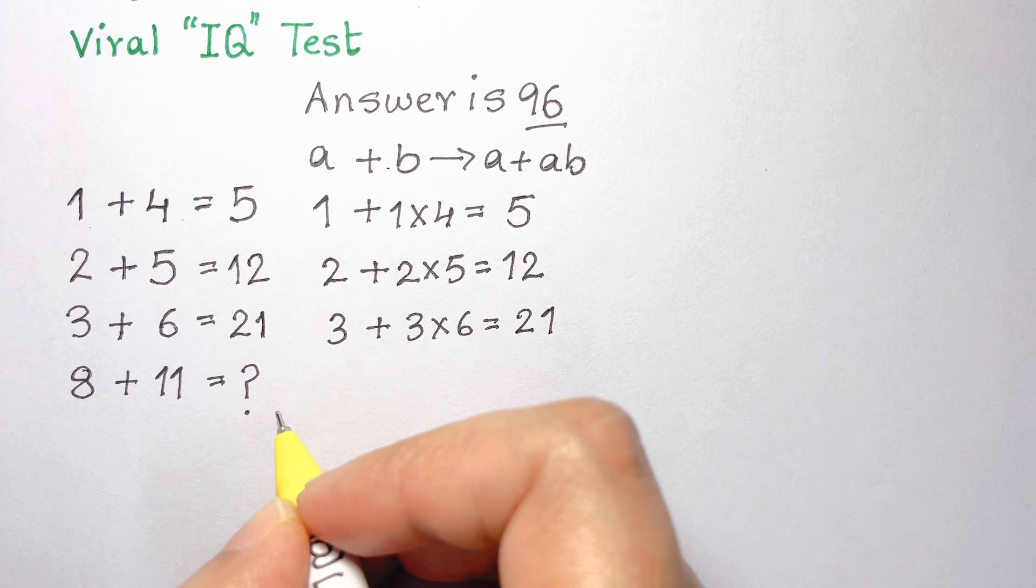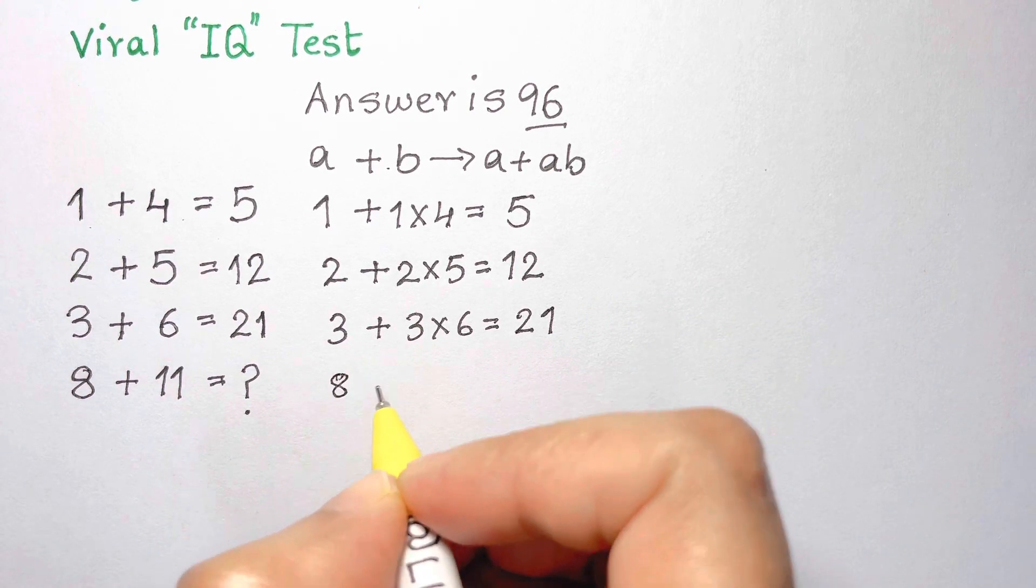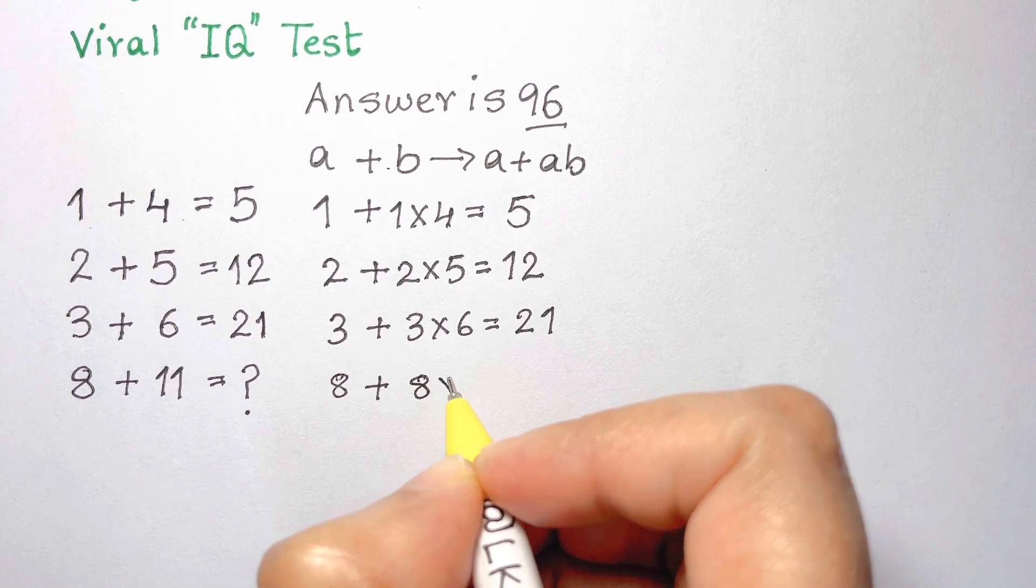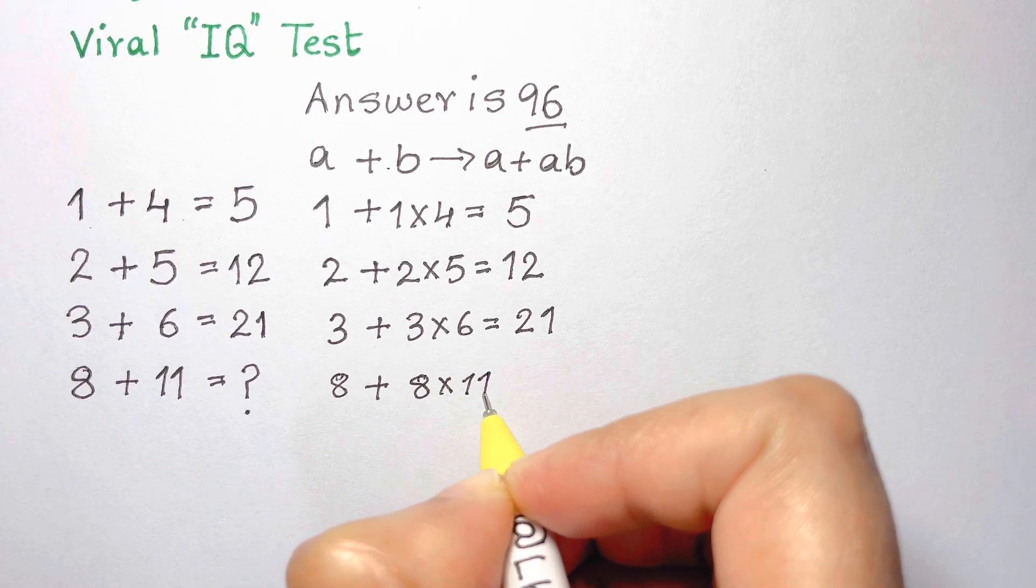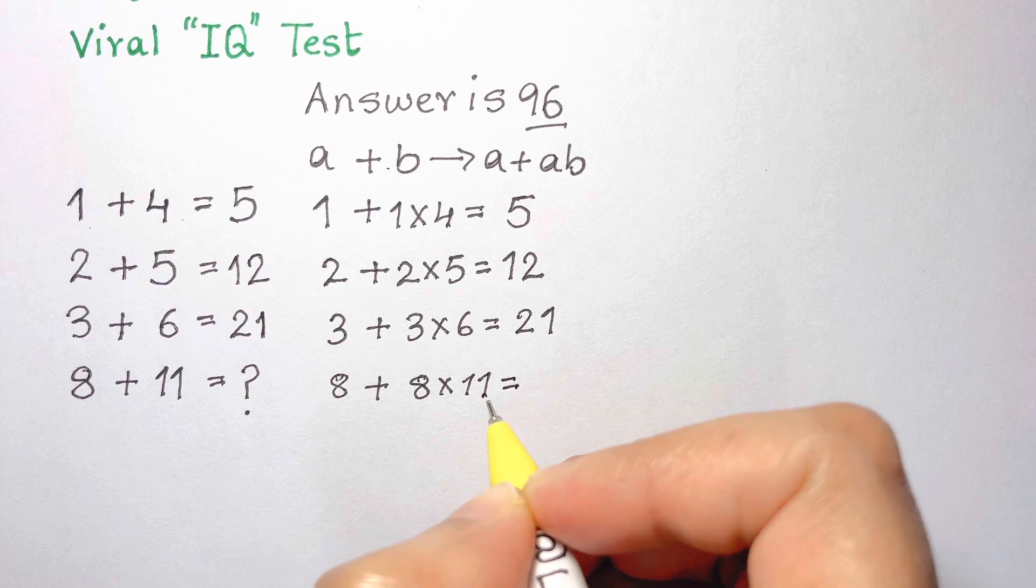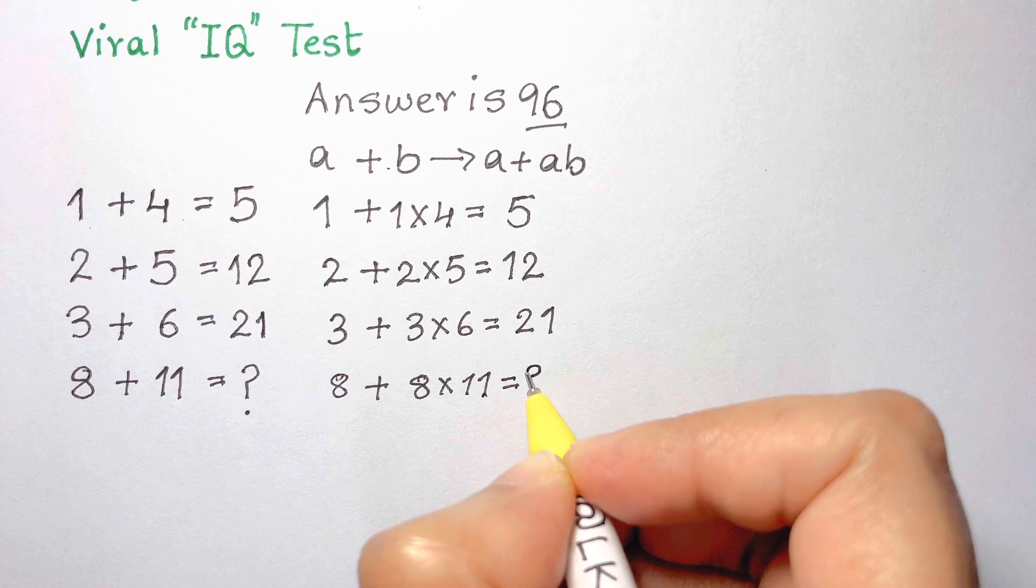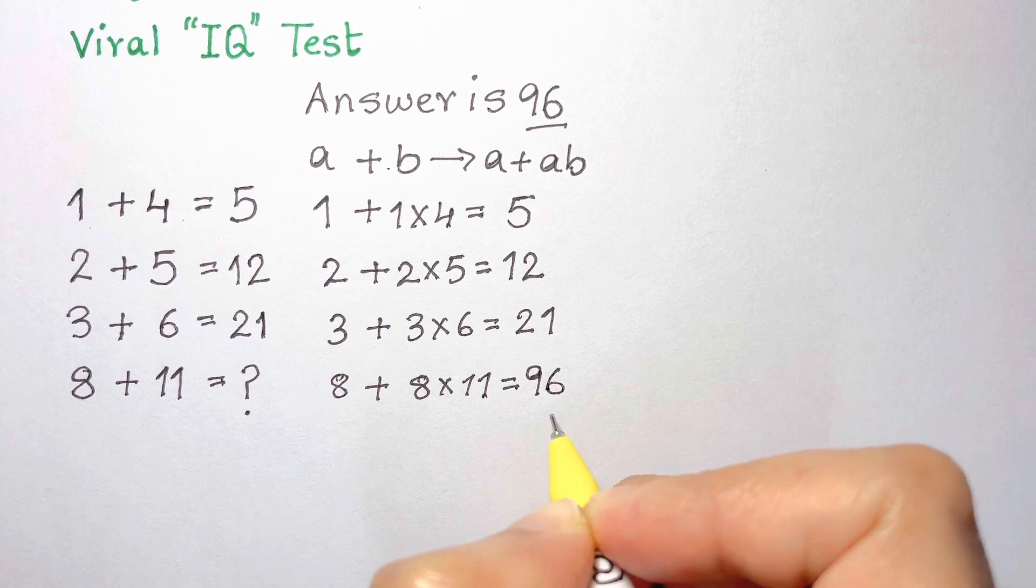This means the final line of 8 plus 11 should be interpreted as 8 plus 8 times 11. 8 times 11 is 88, and adding 8 gets us to the answer of 96.